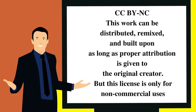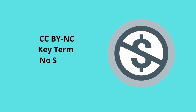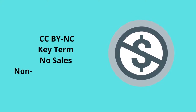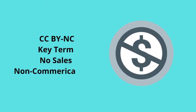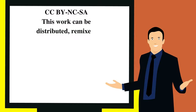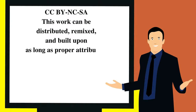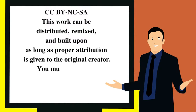Next up is the CC BY-NC license, which allows re-users to distribute, remix, and adapt to build upon the material with attribution, but only for non-commercial purposes. So here you are able to make copies, give away copies, and create derivatives, but you cannot do so for primarily commercial purposes. The key here is non-commercial.